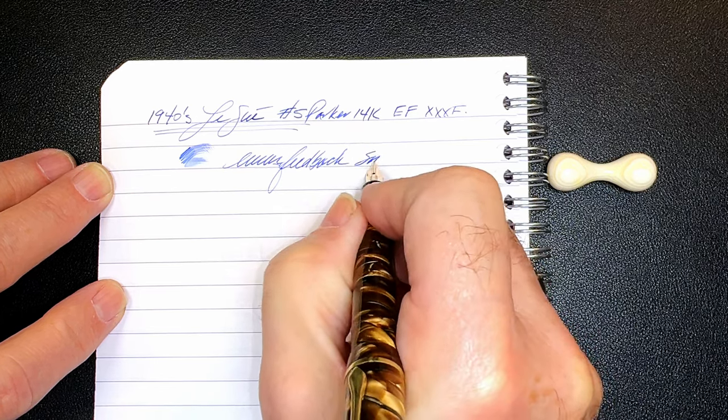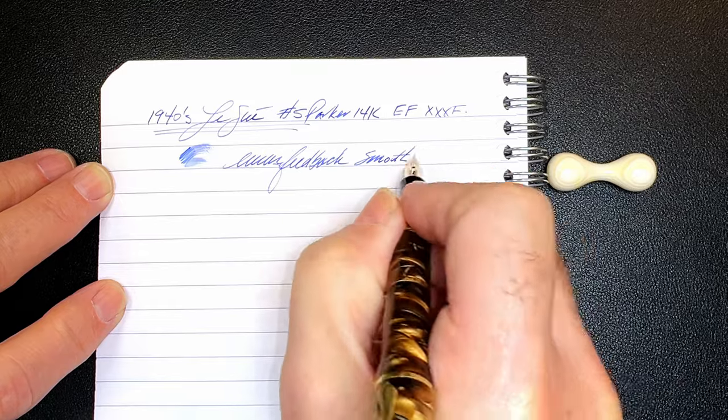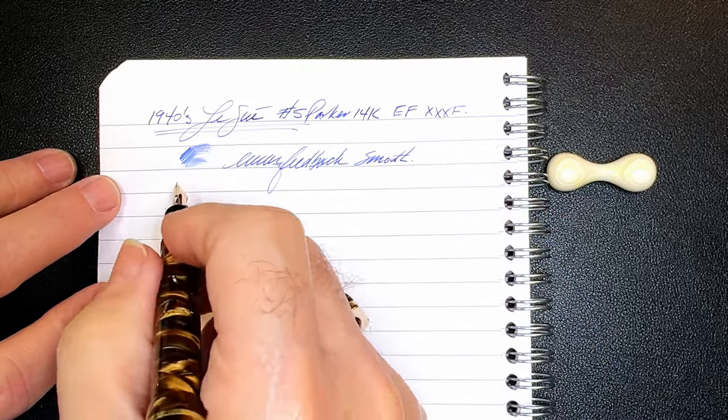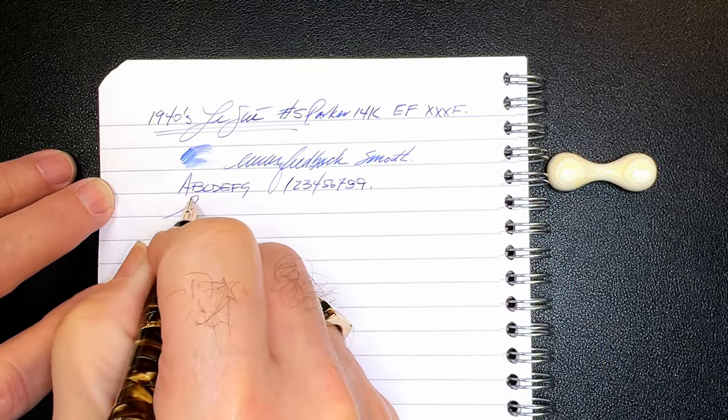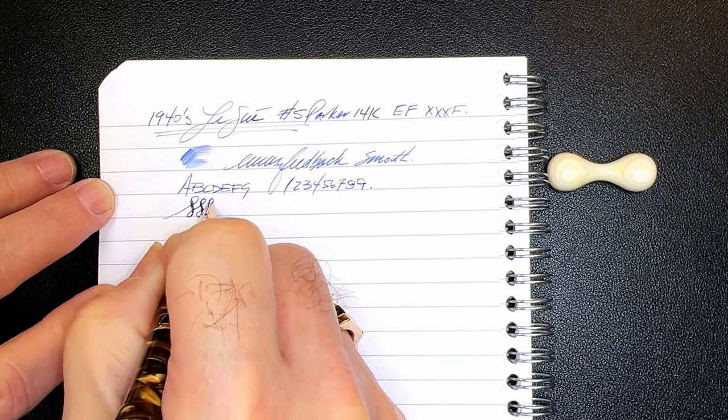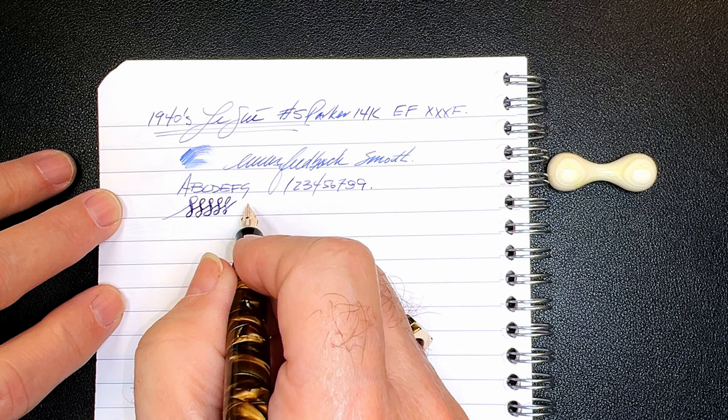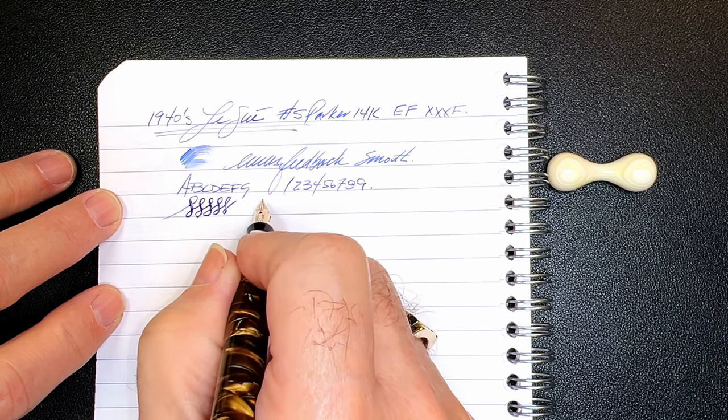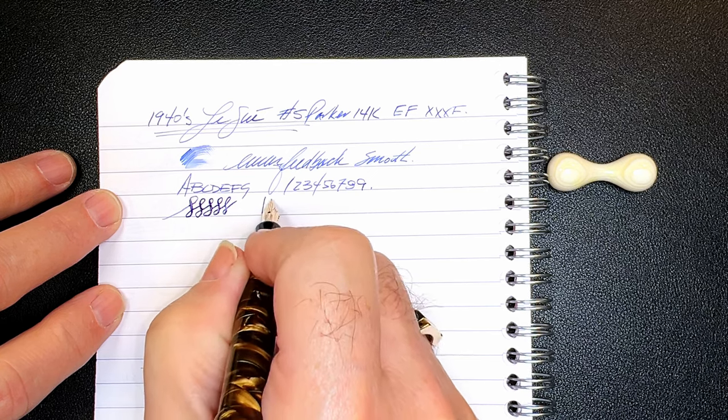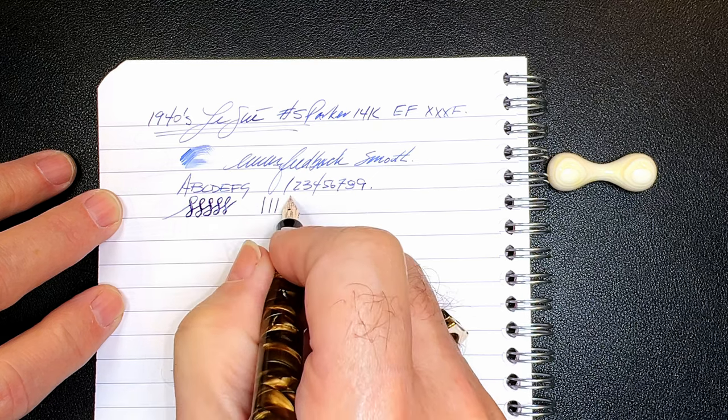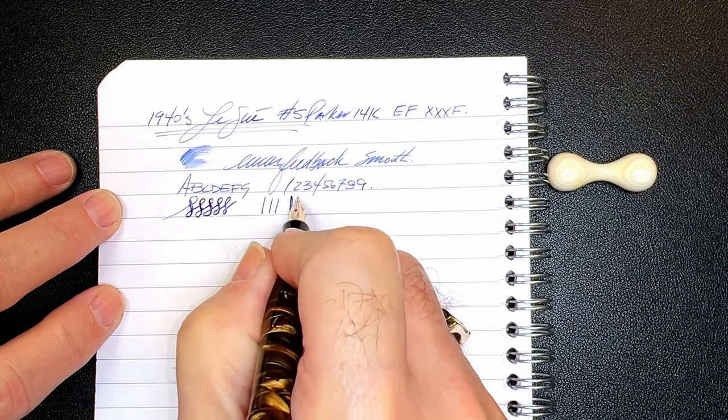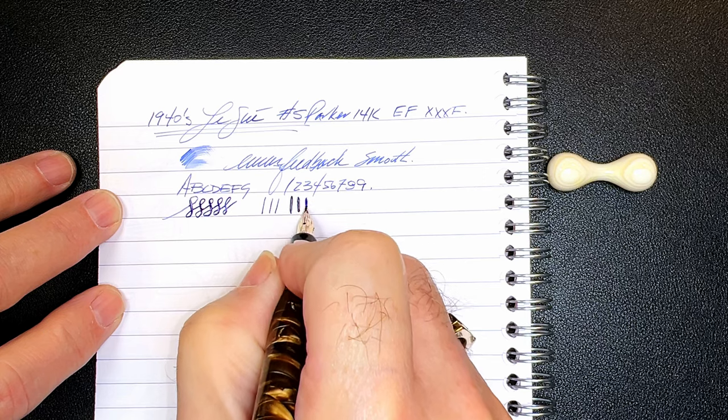But I've got it as smooth as I can so it's not scratchy at all. And that's the line variation. You can squeeze out some. It's not what I would call a flexible nib. But you can get some line variation out of it from very, very thin to a fairly decent thick line.